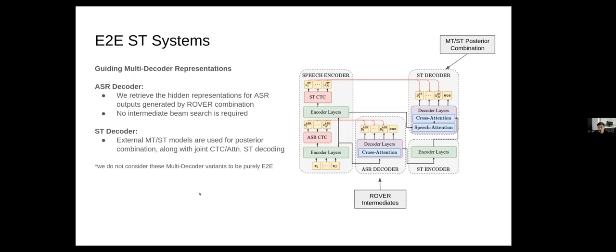Finally, about the multi-decoder, we can use external models to guide the multi-decoder representations. So what we mean by this is that there are hidden representations of the ASR decoder and also the ST decoder. And in the intermediate ASR decoder, we can actually retrieve the hidden representations for any discrete ASR outputs. Here we choose to use ones generated by rover combinations of ASR systems. And this means that, very importantly, we don't need to do an intermediate beam search for this model.